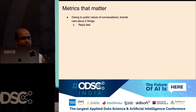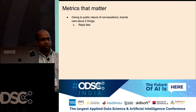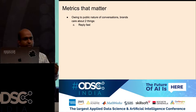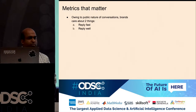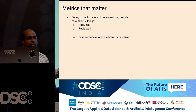Since it's social, everything is public, and there have been many instances where very good or very bad service goes viral. From a brand's perspective, they care about two things for social support: reply fast and reply well. For the purpose of this talk we'll focus on reply fast, though the combination of both contributes to brand image.